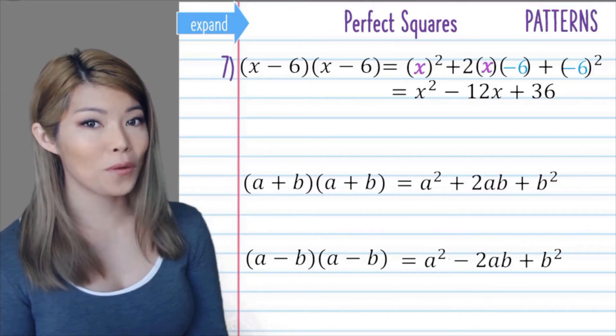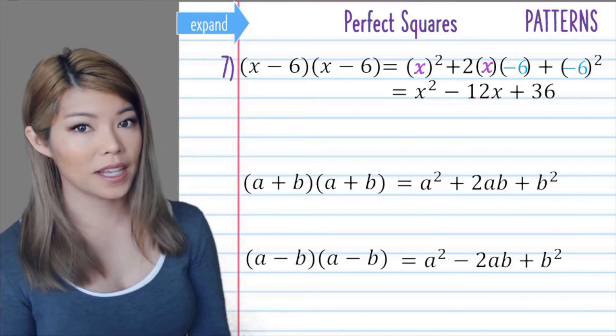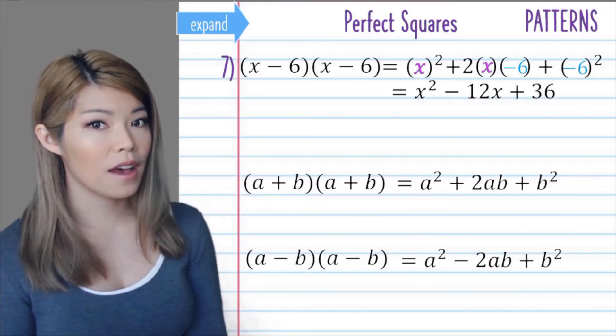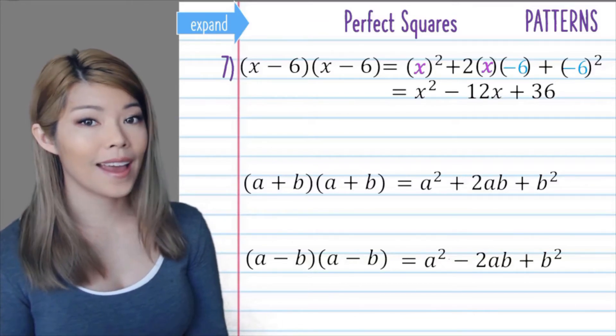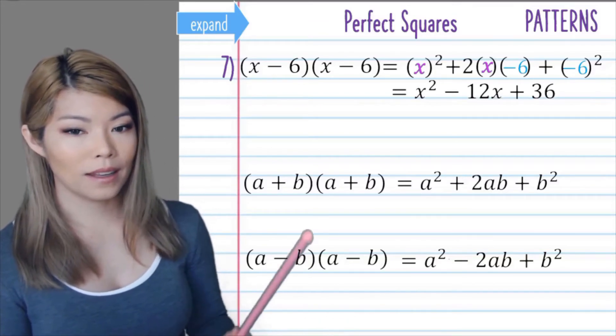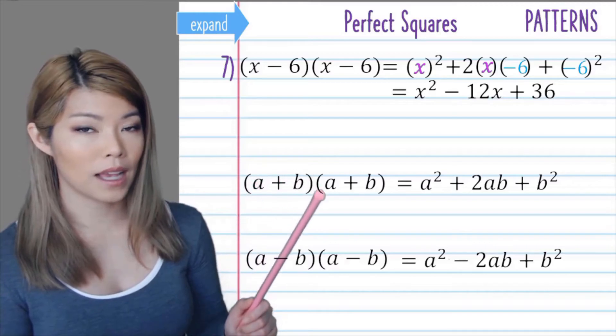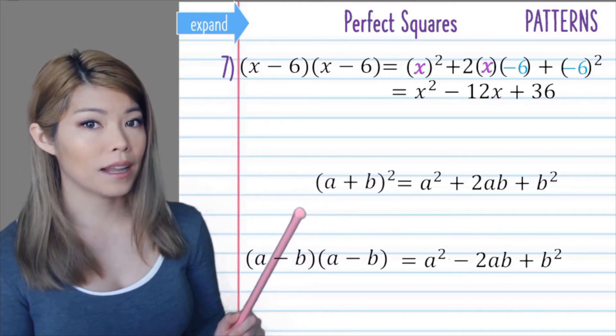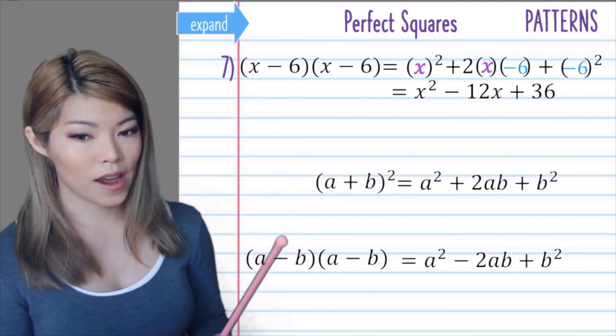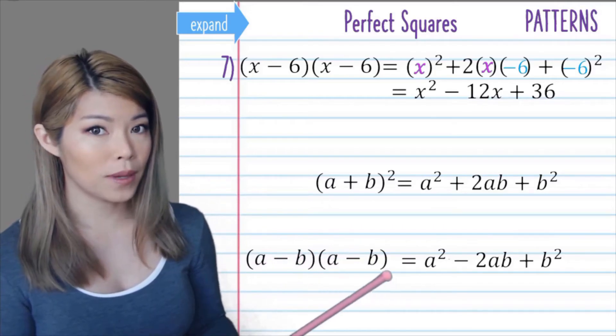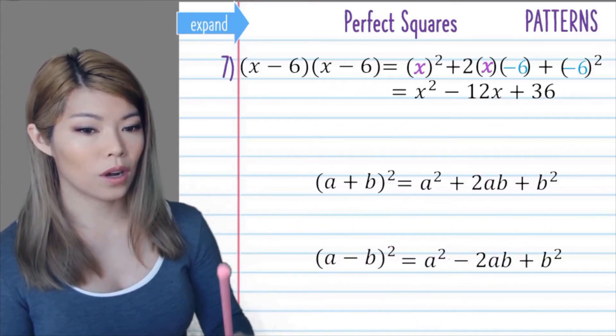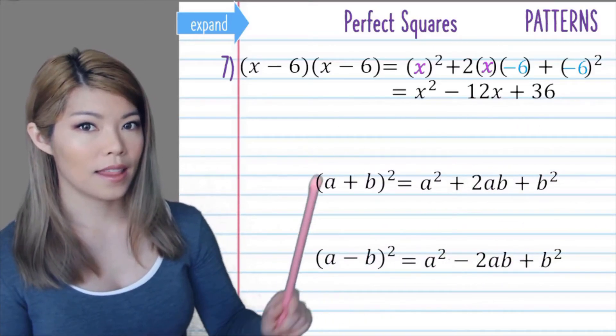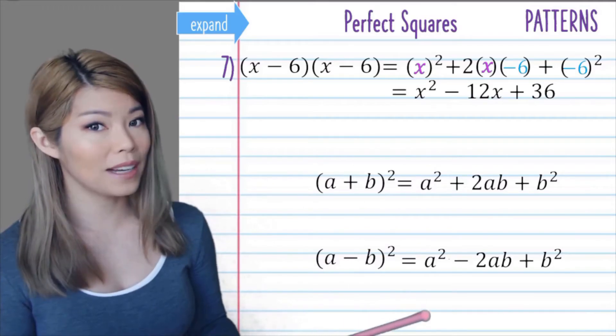What is another way to write a square number? Instead of writing, for example, 5 times 5, you can write it as 5 squared. Instead of writing x times x, you can write it as x squared. So similarly, instead of writing a plus b times a plus b, you could write a plus b squared. And instead of writing a minus b times a minus b, you can write it as a minus b squared. So the formula that you'll see more commonly in textbooks are these ones over here, which mean the same thing.